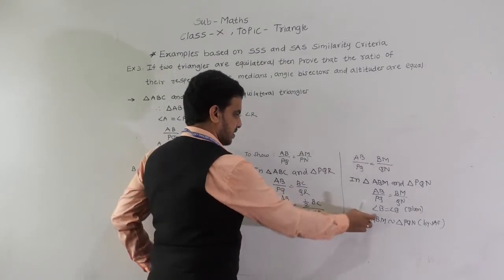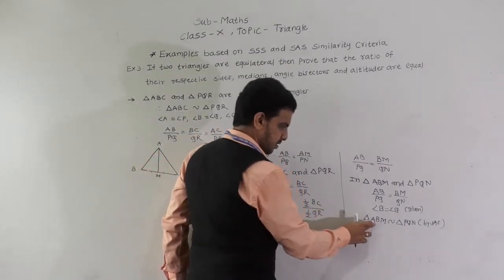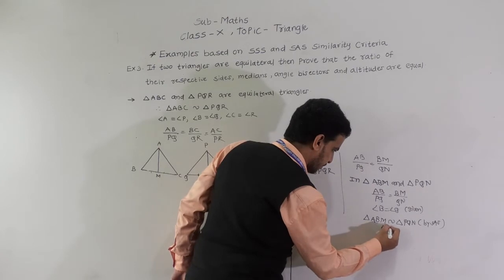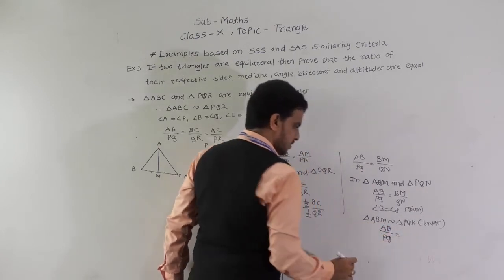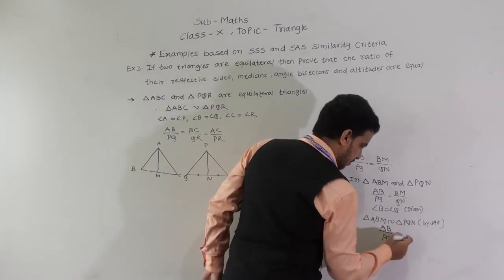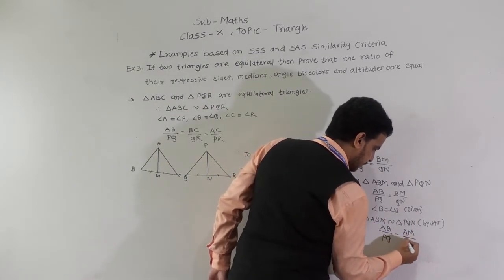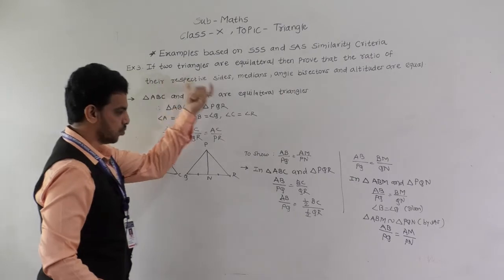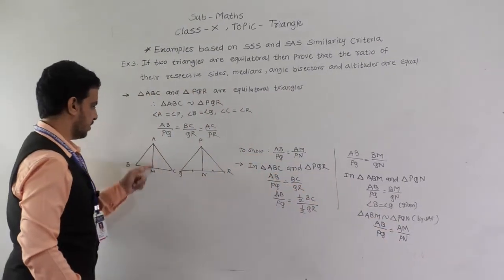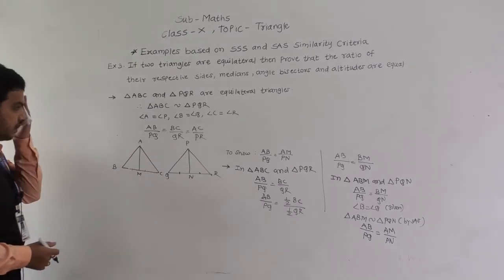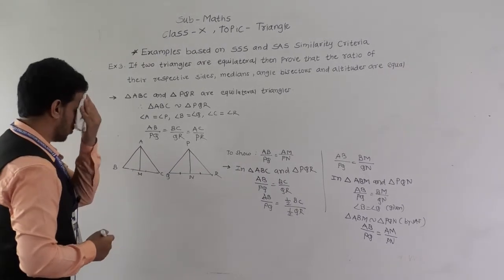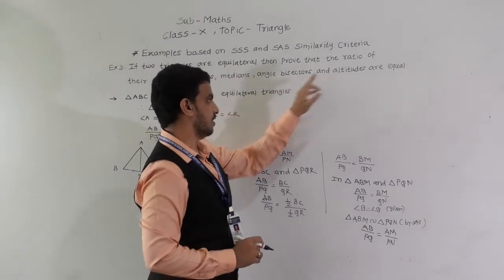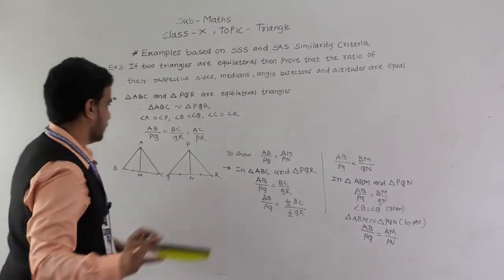Since triangle ABM is similar to triangle PQN, corresponding sides are proportional: AB by PQ equals AM by PN. So the respective sides and their corresponding medians are proportional. Similarly, we need to show the same for angle bisectors and altitudes. For angle bisectors, take AL and PS as angle bisectors of angles A and P respectively.